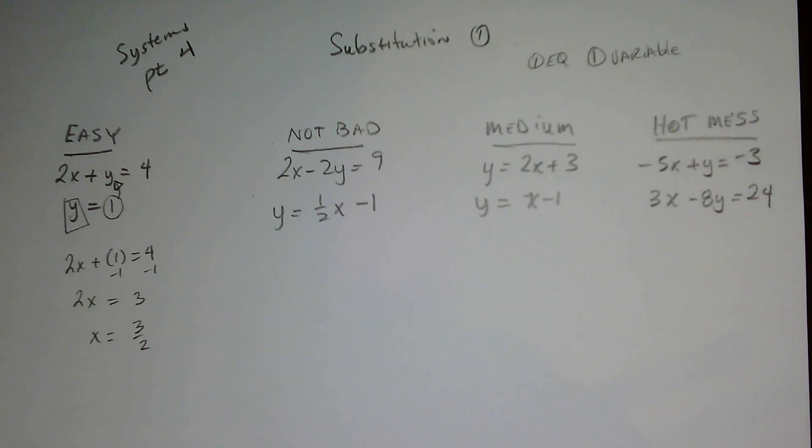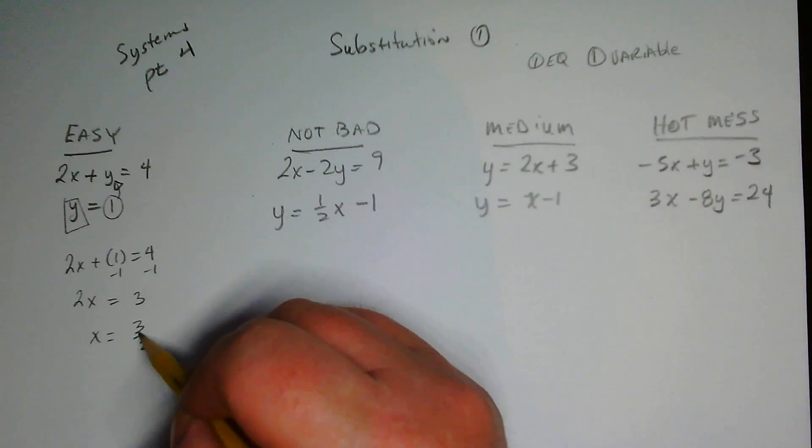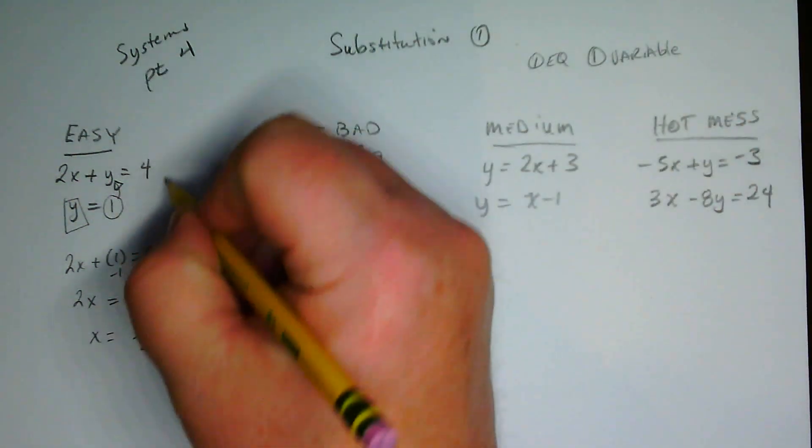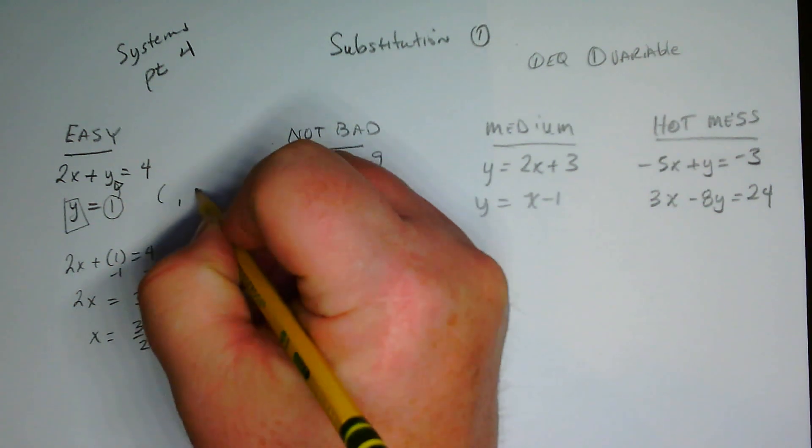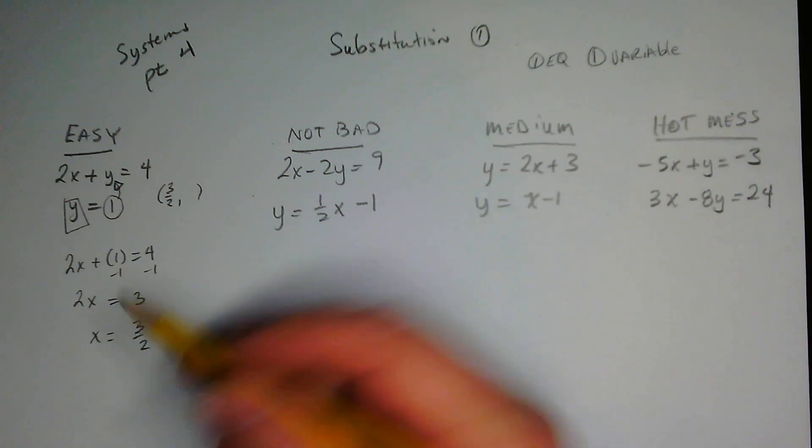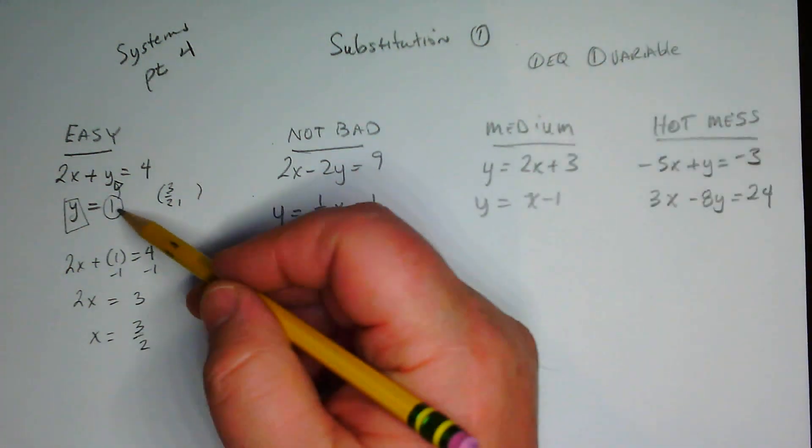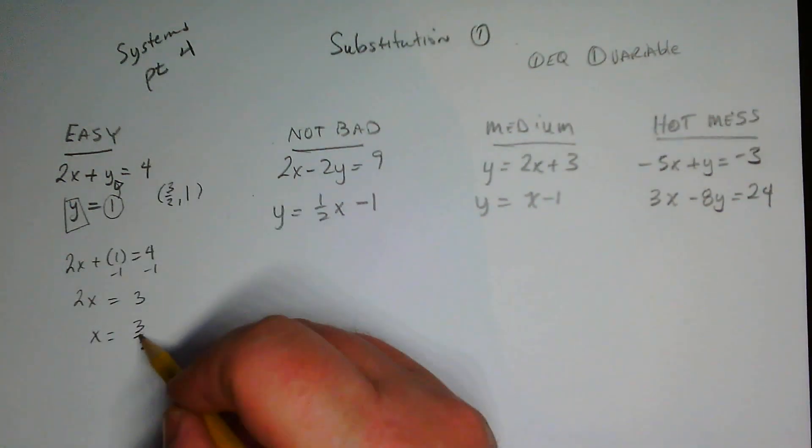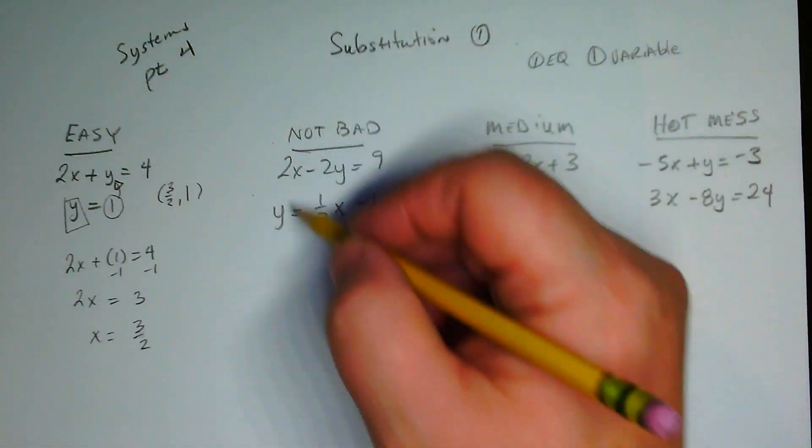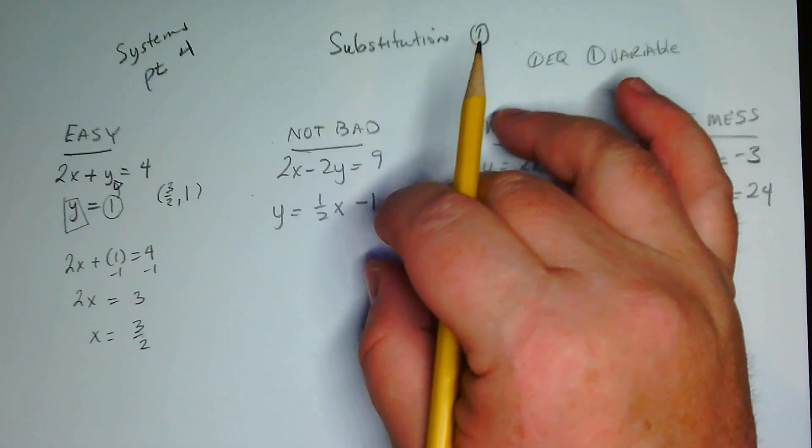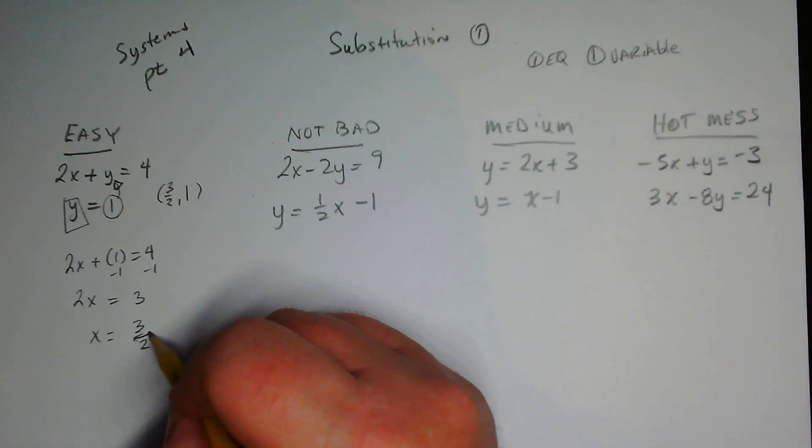Alright, so now we got that all sorted out and squared away. We're going to now substitute this back in, because remember, a solution to a system is an ordered pair - you need an x and you need a y. Right now, we know x is three over two. Let's take this... oh, well, actually we don't even need to. We already know that y is equal to one.